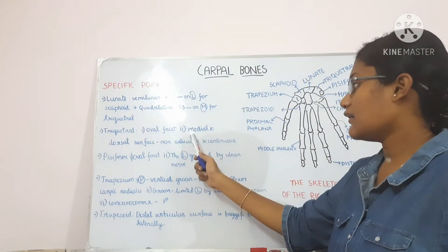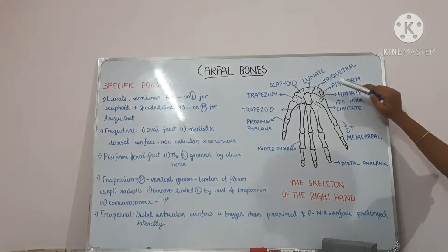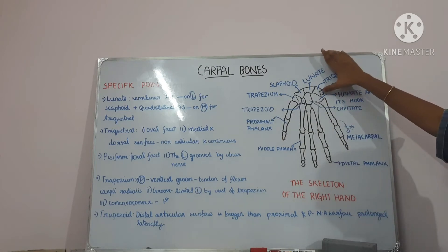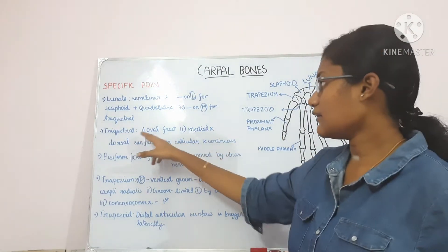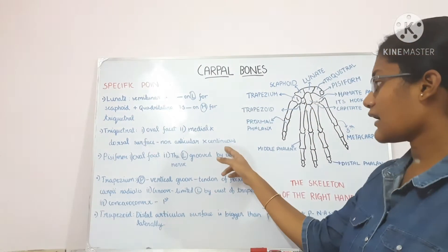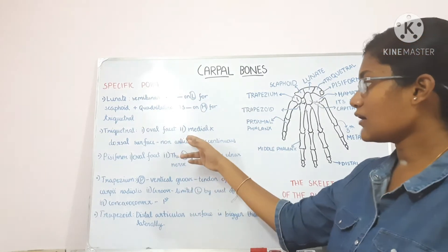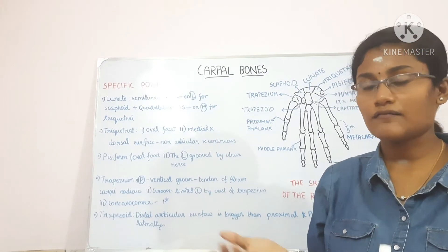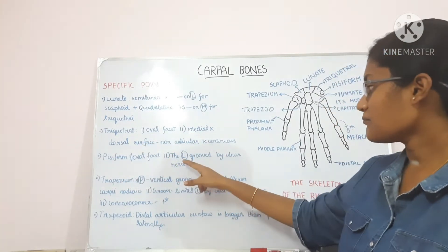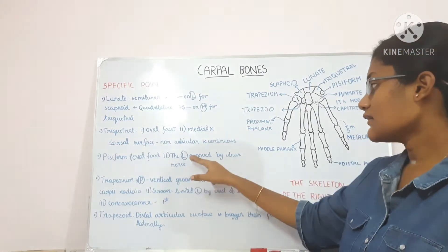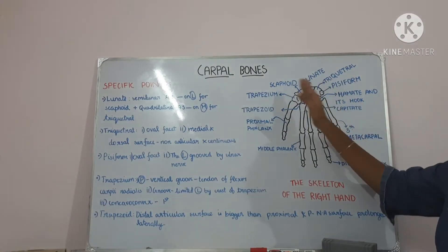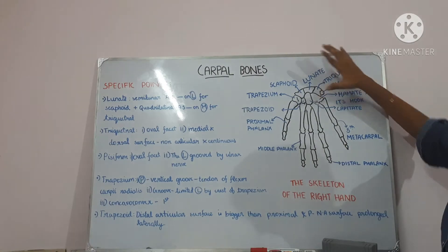The pisiform bone has an oval facet on the dorsal aspect on the proximal part. The triquetral also has medial and dorsal surfaces which are non-articular and continuous, so the triquetral has a non-articular dorsal surface and an articular palmar surface. The pisiform bone is grooved laterally by the ulnar nerve.